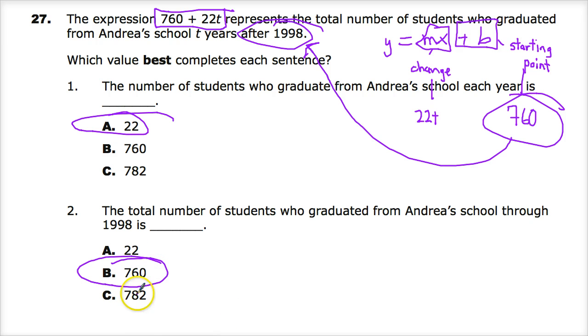Where'd they get 782? Well, they just added these two things together. But if you can reorganize your thoughts a little bit around slope and intercept and think of slope and intercept as being a starting point and a component of change, I think it might make these types of questions easier as you go forward.